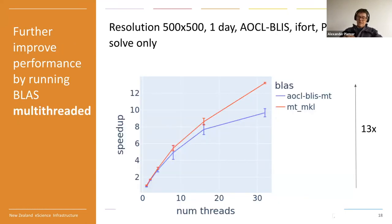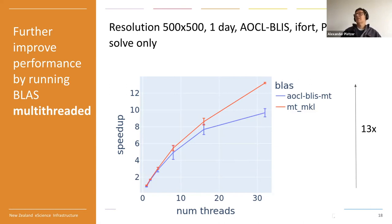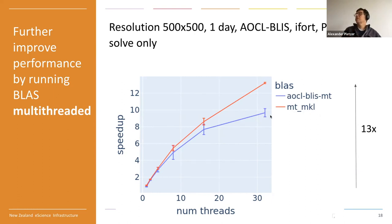You can also use a multi-threaded version of the BLAS libraries. Comparing multi-threaded MKL versus AOCL BLIS, MKL is doing best. By using multi-threading for just the linear solver part of the algorithm, you get a 13x speedup over single threading.